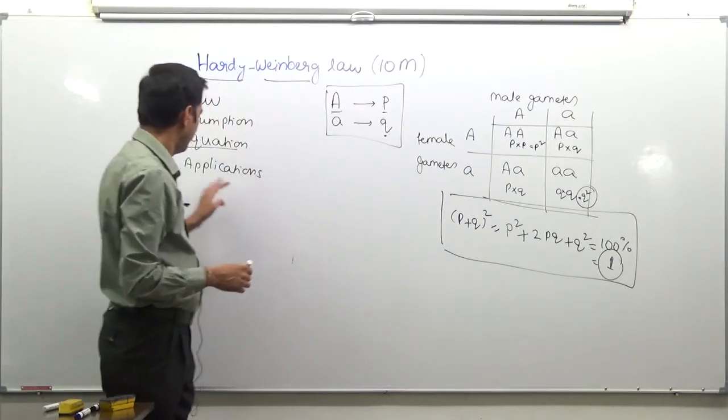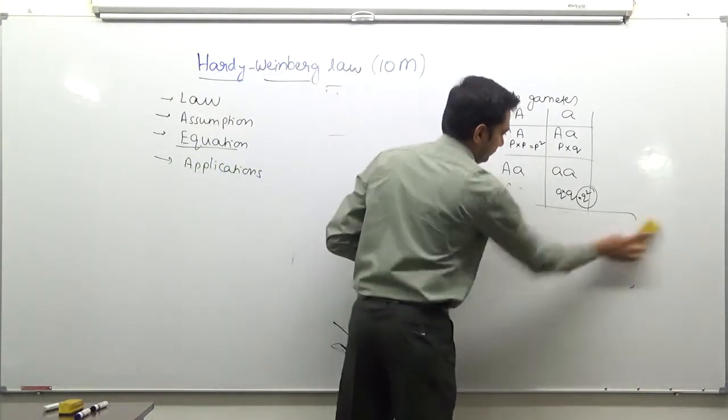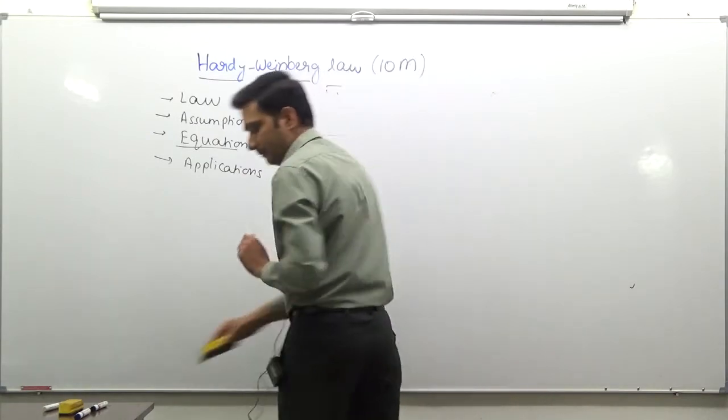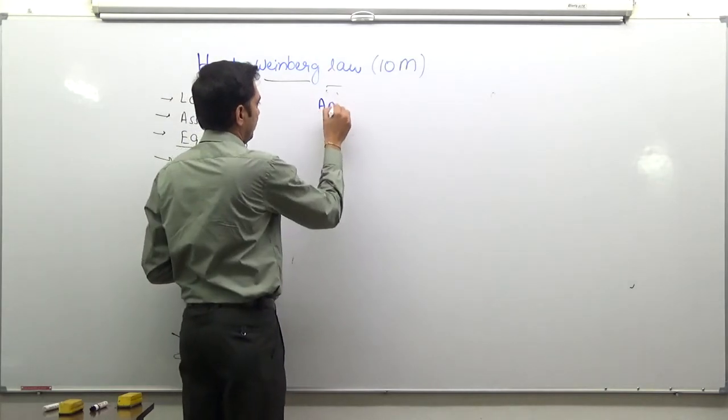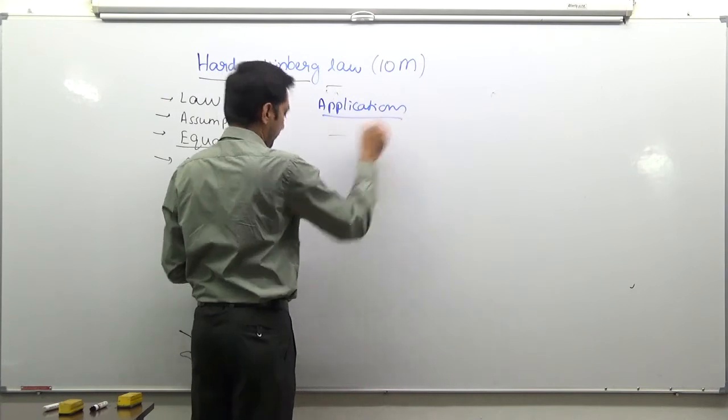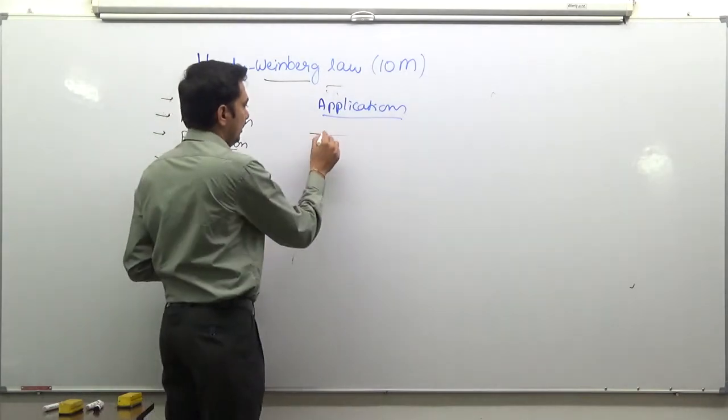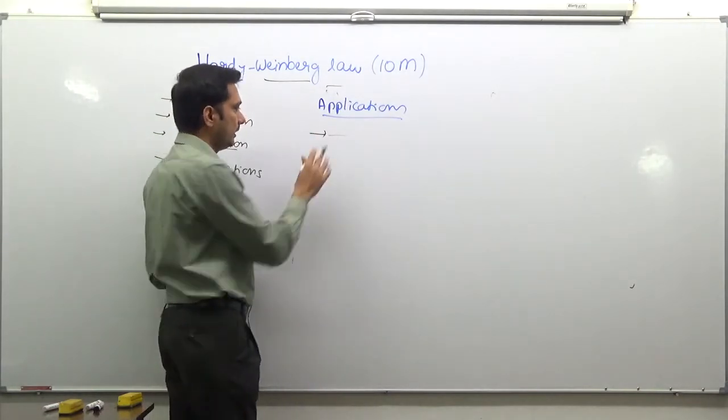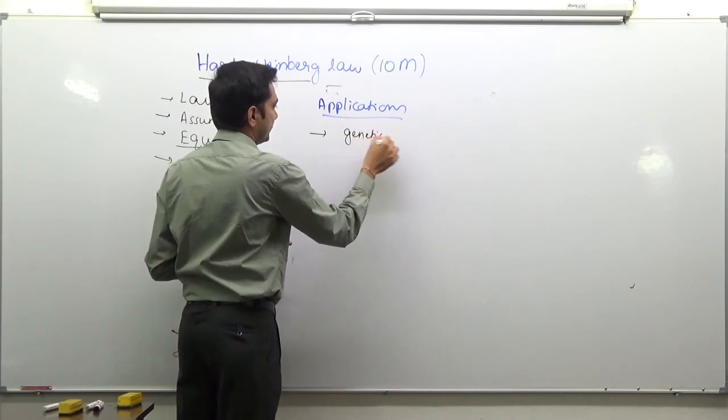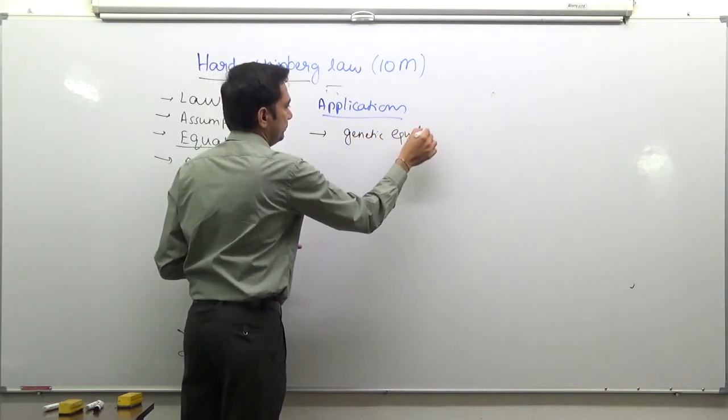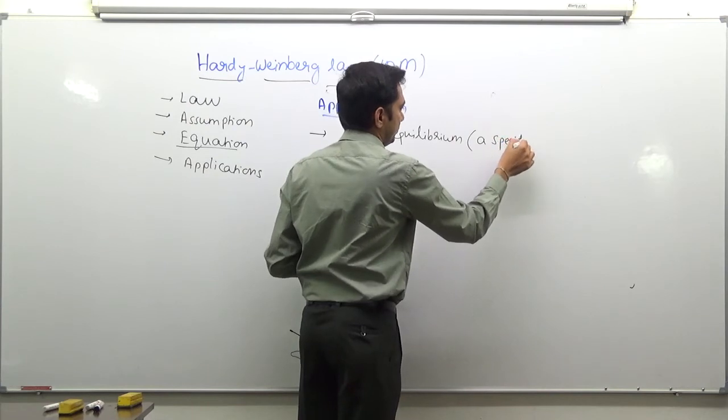Where exactly can we use this Hardy-Weinberg law? As the name suggest and as the discussion based on the discussion we had so far, the frequencies that we have seen of any allele can be calculated using Hardy-Weinberg law and to check whether population exist at a genetic equilibrium. Of course, this is with respect to a specific gene.